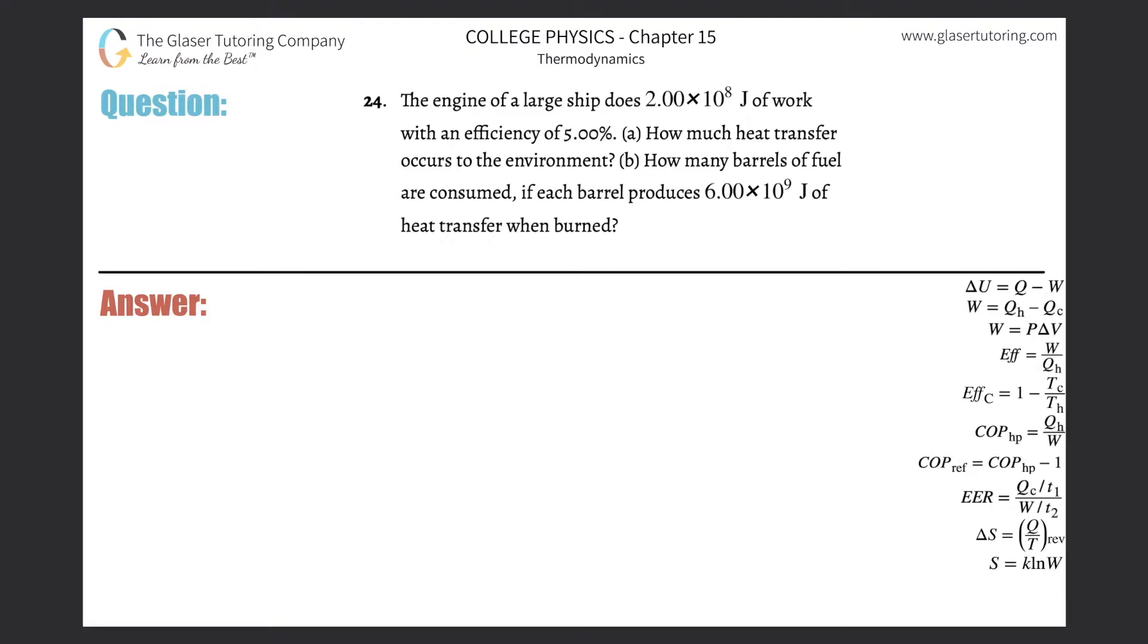Number 24: The engine of a large ship does 2×10^8 joules of work with an efficiency of 5%. Letter A: How much heat transfer occurs to the environment? They gave us a work value for an engine, told us the efficiency, and now want the heat transfer to the environment.